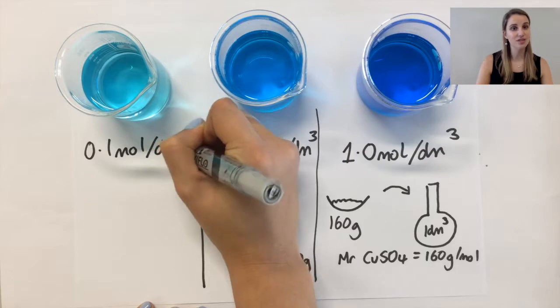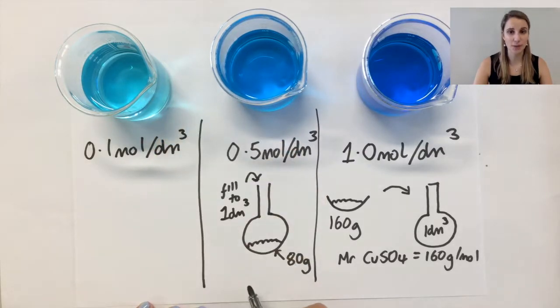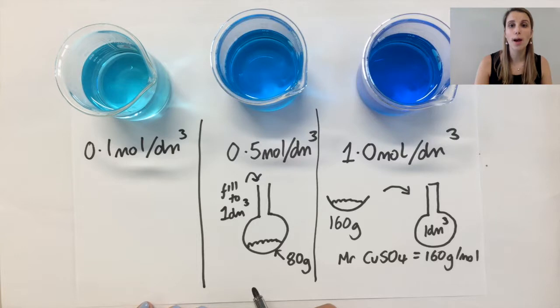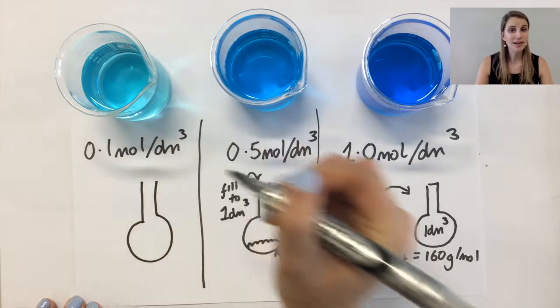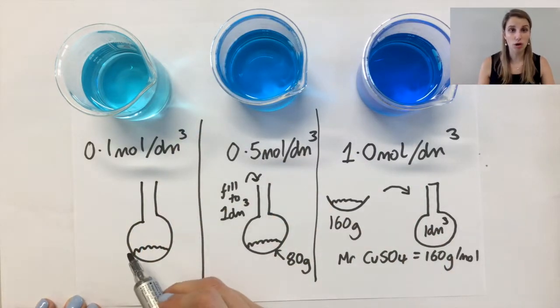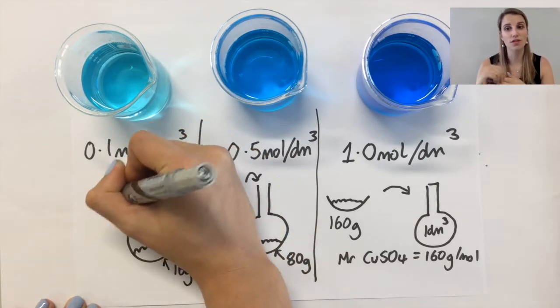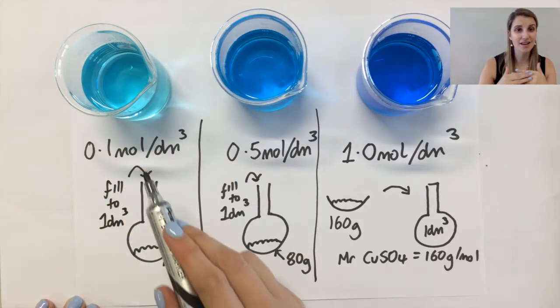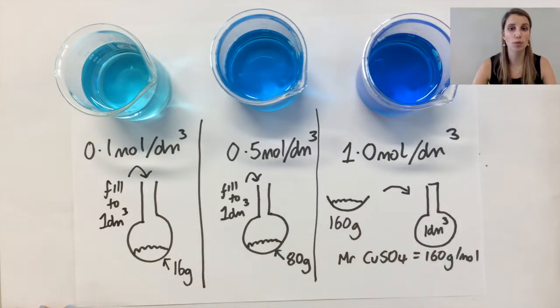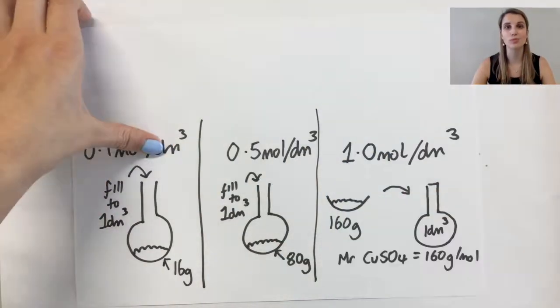The last one, the one on the left, you can definitely have a go at yourself. So this one was actually only 0.1 moles per decimetre cubed. So what mass of copper sulphate do I need in this scenario? The answer is 16 grams. So I only need a tenth of a mole of the mass. So what that means is I need 16 grams rather than the 160 I had at the beginning, again filling it to one decimetre cubed to make my 0.1 moles per decimetre cubed solution overall.